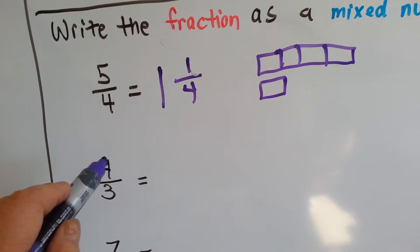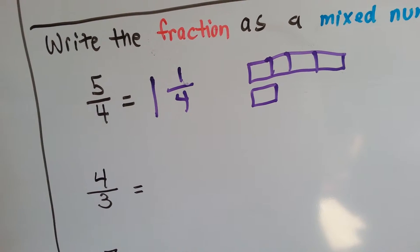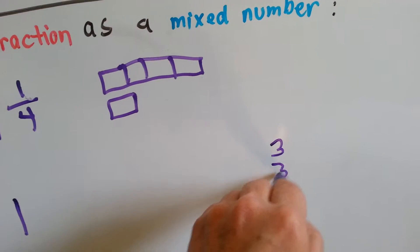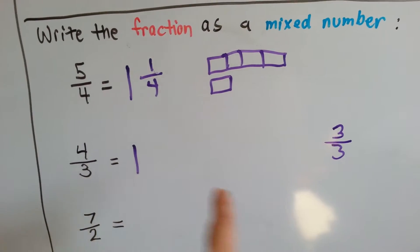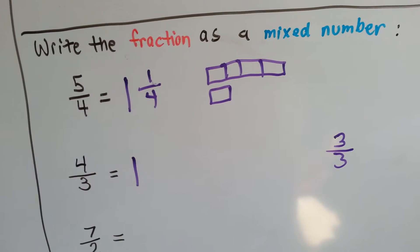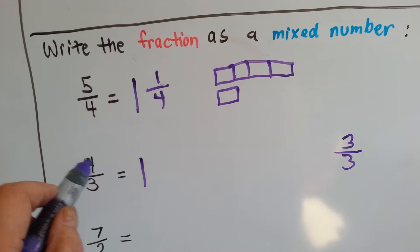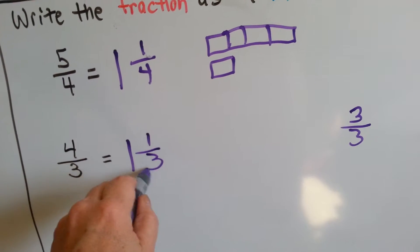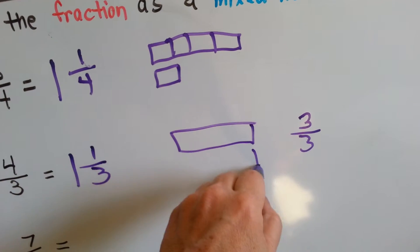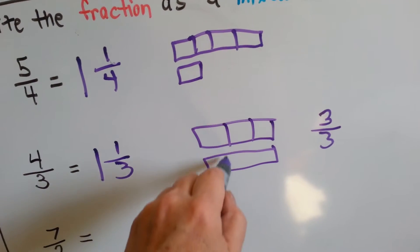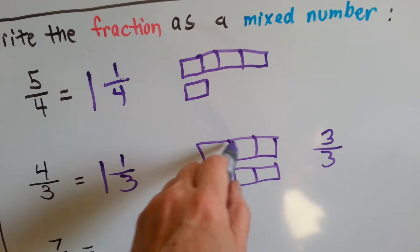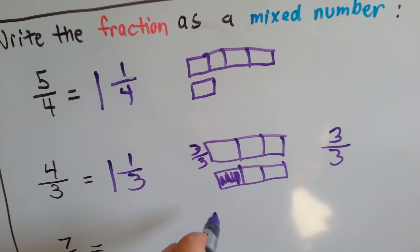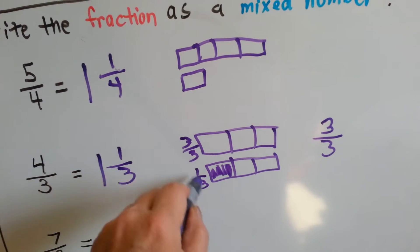Let's try it again. We have four-thirds. How many times can three fit into four? One time. So that's the three-thirds we took out of it — the whole one we took out of it. How much is left over? Four take away three is one, so that means there's a little one-third left over. If we had three-thirds and one more third, we would have four-thirds.